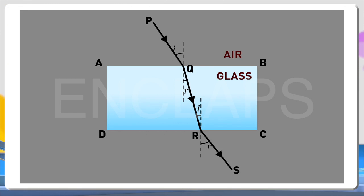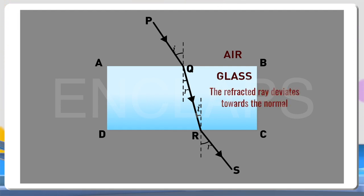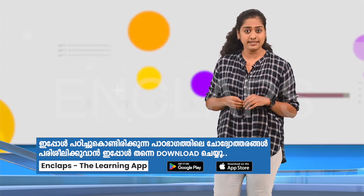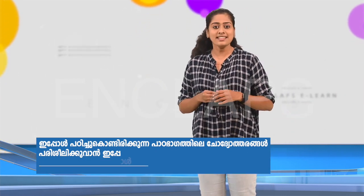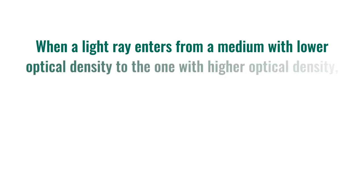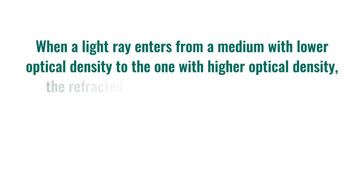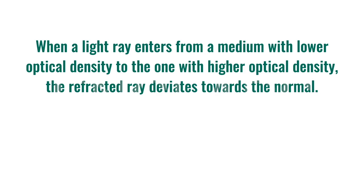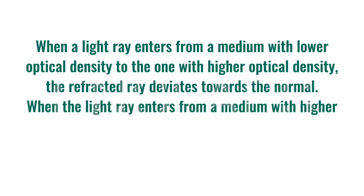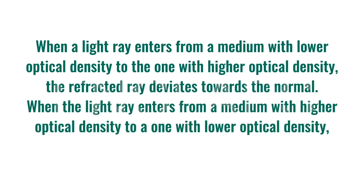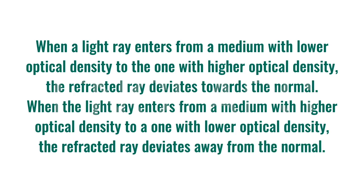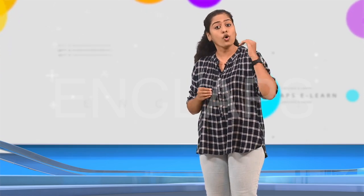Now let's analyze both refractions together. While going from air to glass, the refracted ray deviates towards the normal, and from glass to air, the refracted ray deviates away from the normal. Can we relate this to optical density? Glass has greater optical density than air. So we can clearly say that when a light ray enters from a medium of lower optical density to one of higher optical density, the refracted ray deviates towards the normal. When the light ray enters from higher to lower optical density, the refracted ray deviates away from the normal.